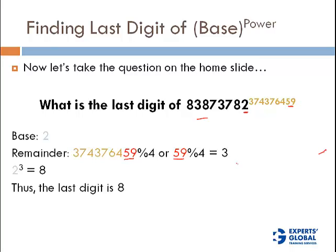Yes, that's my answer. You can do it in 10 seconds: last digit of base is 2, remainder of 59 divided by 4 is 3, so 2 raised to the power 3 is 8.